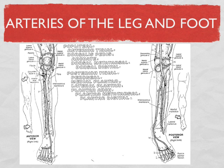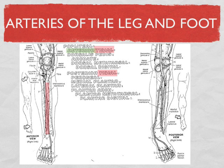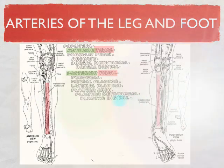Start with the major bones in the leg: the tibia and fibula. Right away you see two tibial arteries. The artery coming down the back of the knee is called the popliteal artery. Then it branches into an anterior tibial, which snakes through a hole in the interosseous membrane to get to the front, and a posterior tibial, which continues right down the back and into the foot.